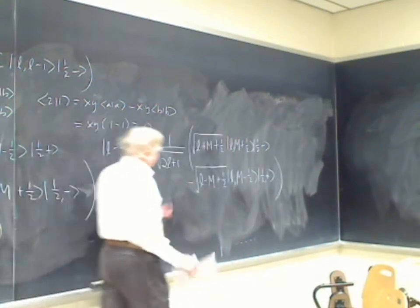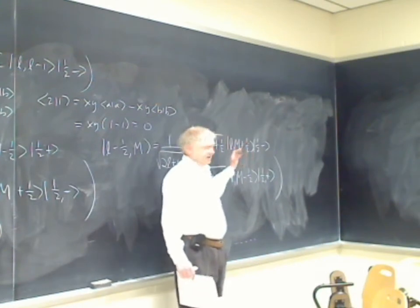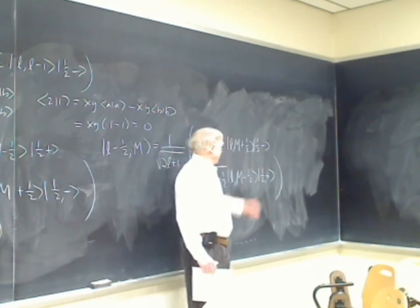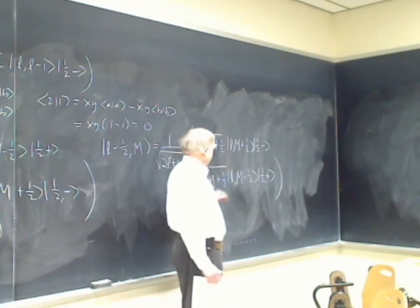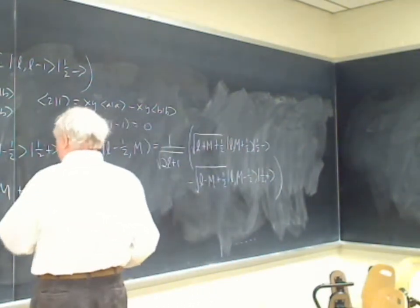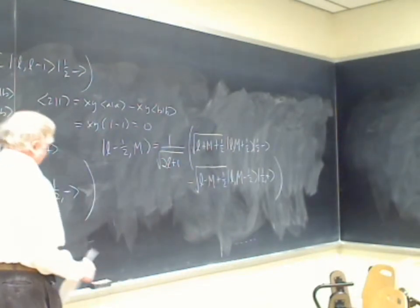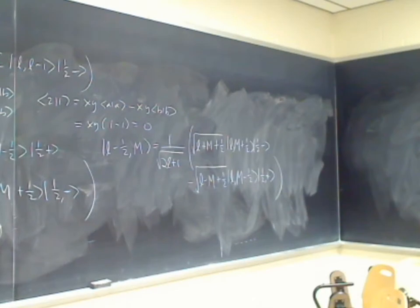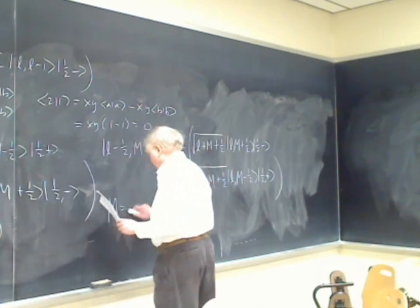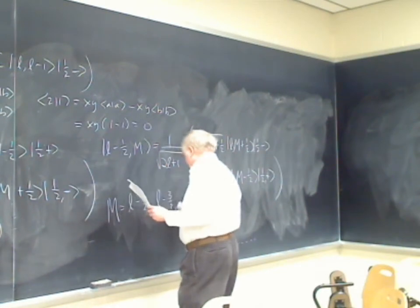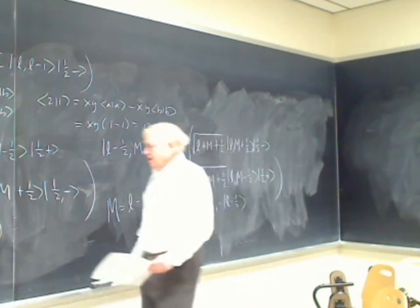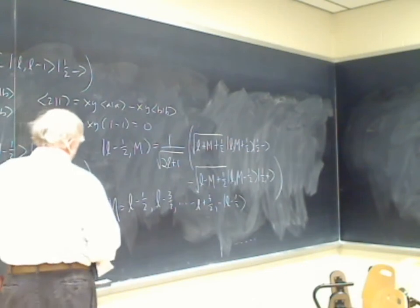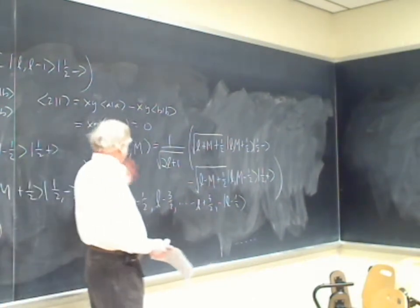With the convention that the coefficient of |m+½⟩ should be positive, the j = l−½ states are: |l−½, M⟩ = (1/√(2l+1)) [√(l+M+½)|l, M+½⟩⊗|½,−⟩ − √(l−M+½)|l, M−½⟩⊗|½,+⟩]. Here M runs from l−½ down to −l+½.